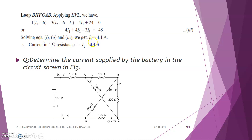On analyzing and solving equations 1, 2, and 3, we get the value of I1 equal to 4.1 ampere. The question asks for the current flowing through the 4-ohm resistance, which is I1. So the answer is 4.1 ampere.